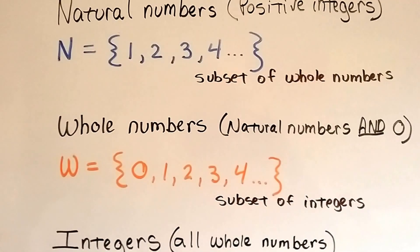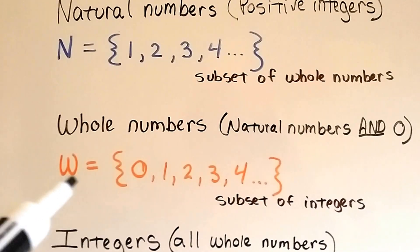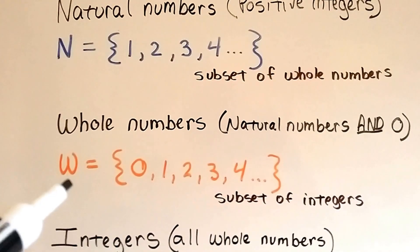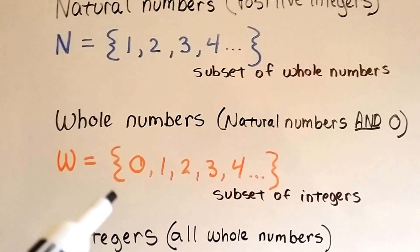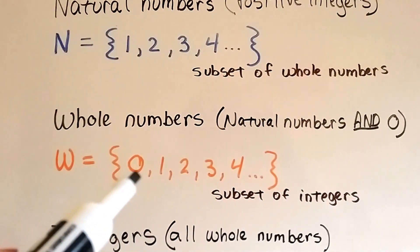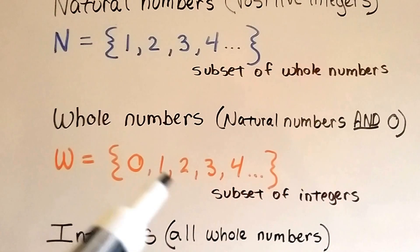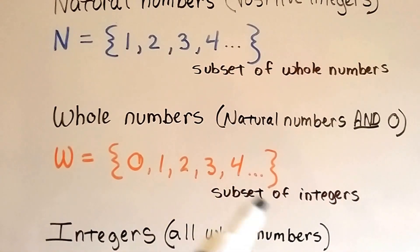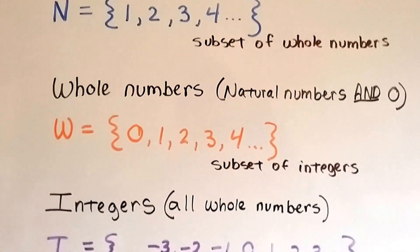W would be the name of the whole number set — we use a capital letter. W is equal to the set of whole numbers: 0, 1, 2, 3, 4, and it would continue on up into infinity.